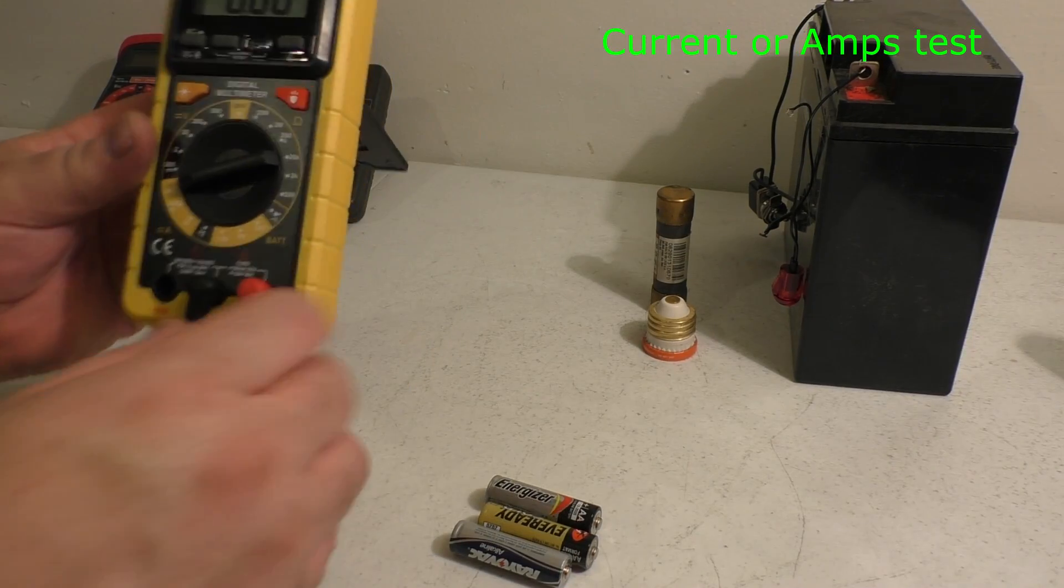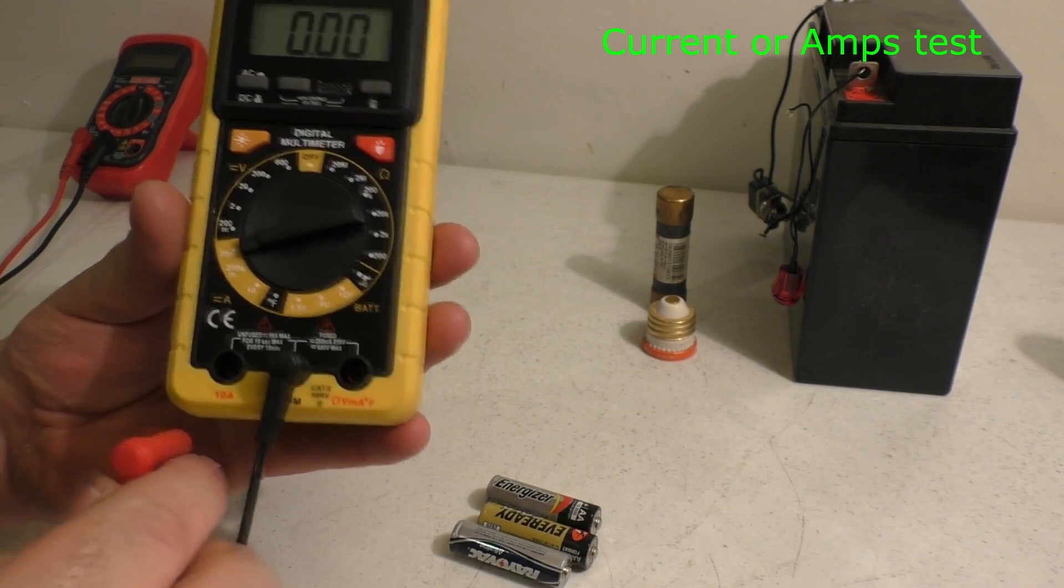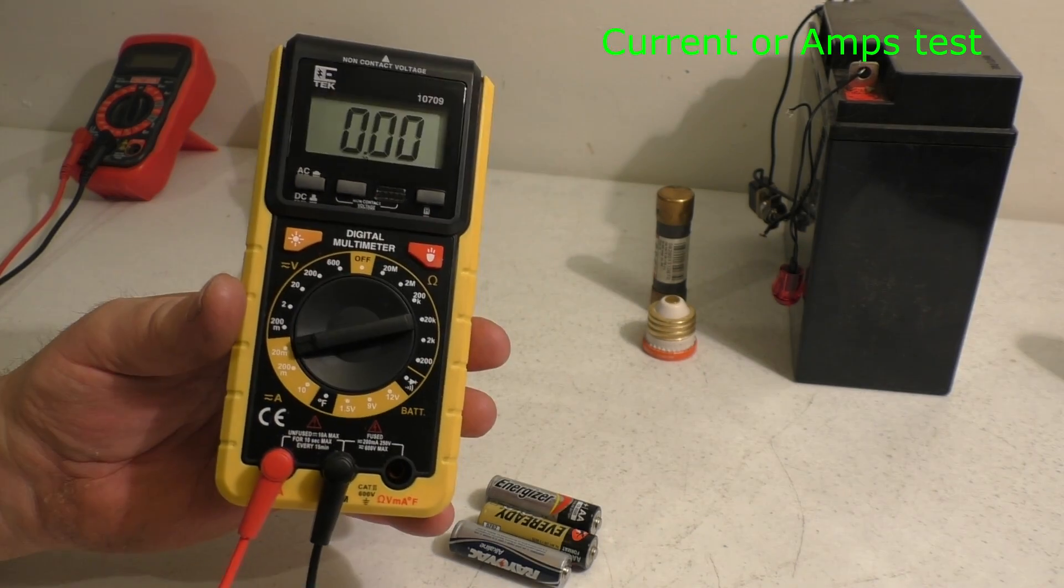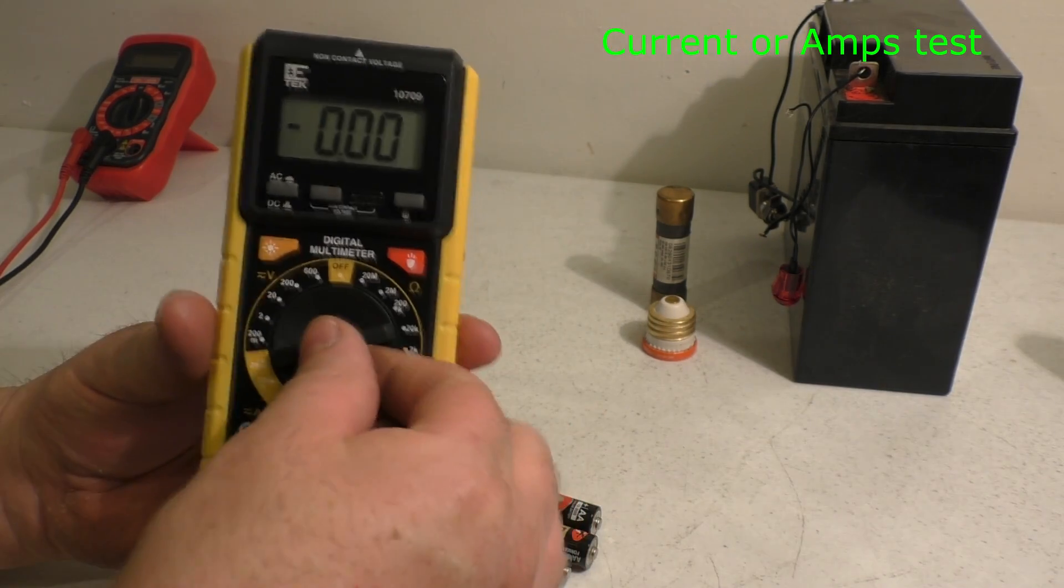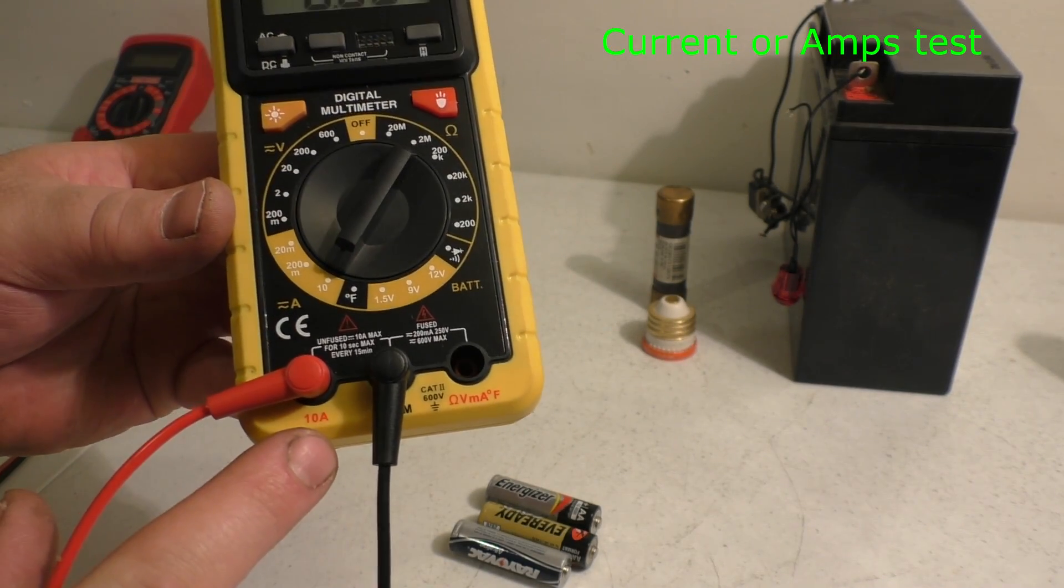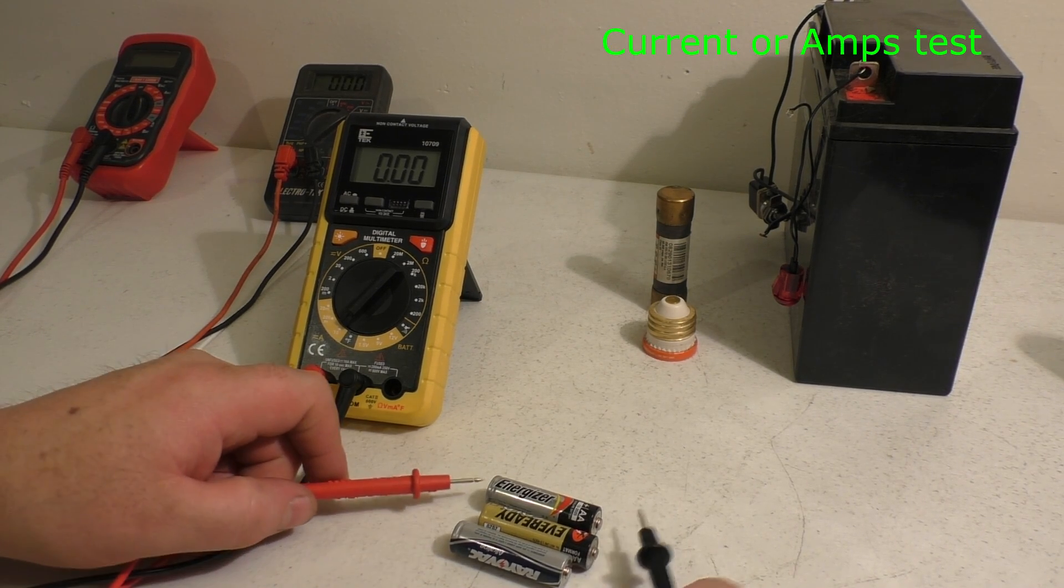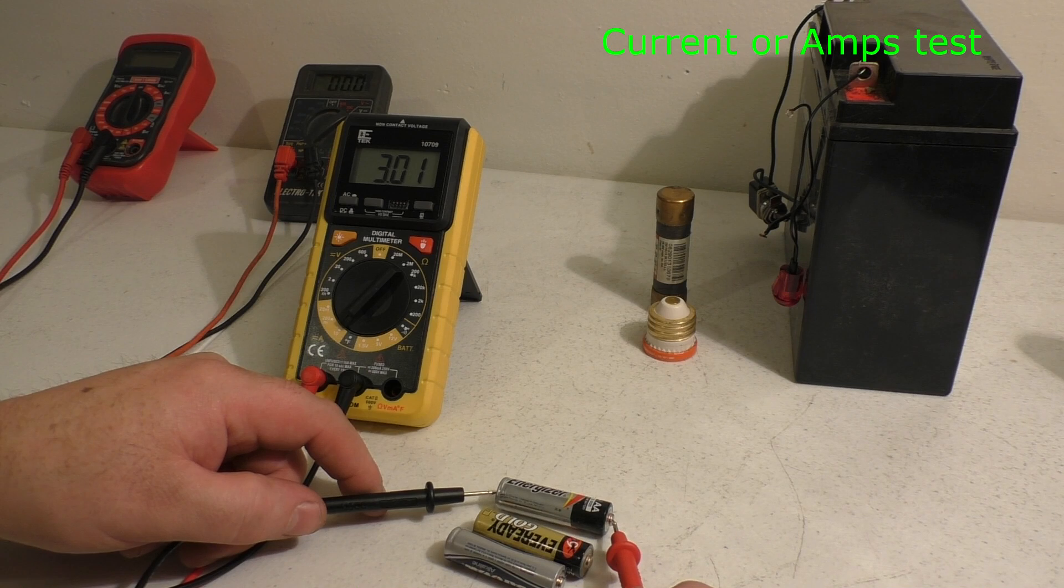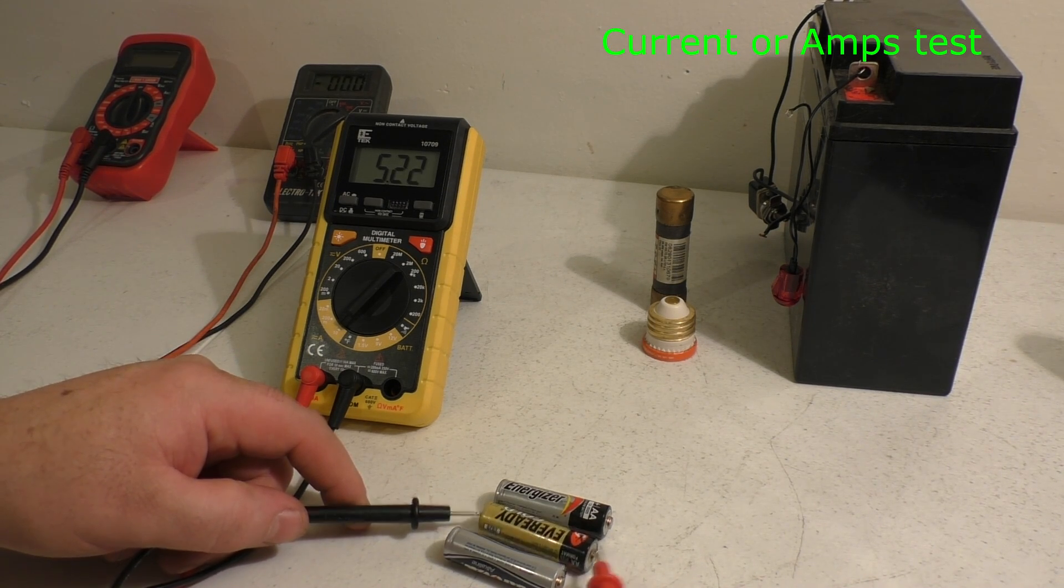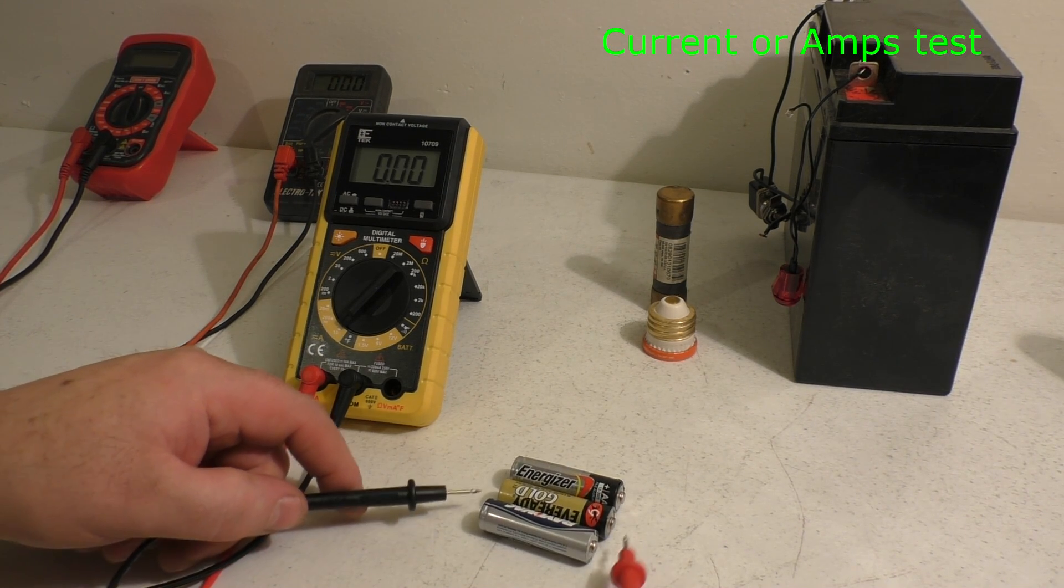Now to test amps, you're going to want to pull your positive leg, move it over to the 10 amp side. Now this is for smaller batteries on DC. You want to turn your amps setting to the 10 with this positive leg over on the 10 amp side. This is actually a more accurate way to test your batteries, I think. This battery is showing around 2.9 amp. That battery is 5.36 amp. There's a new battery, 6.24 amp. All these are 1.5 volt batteries.